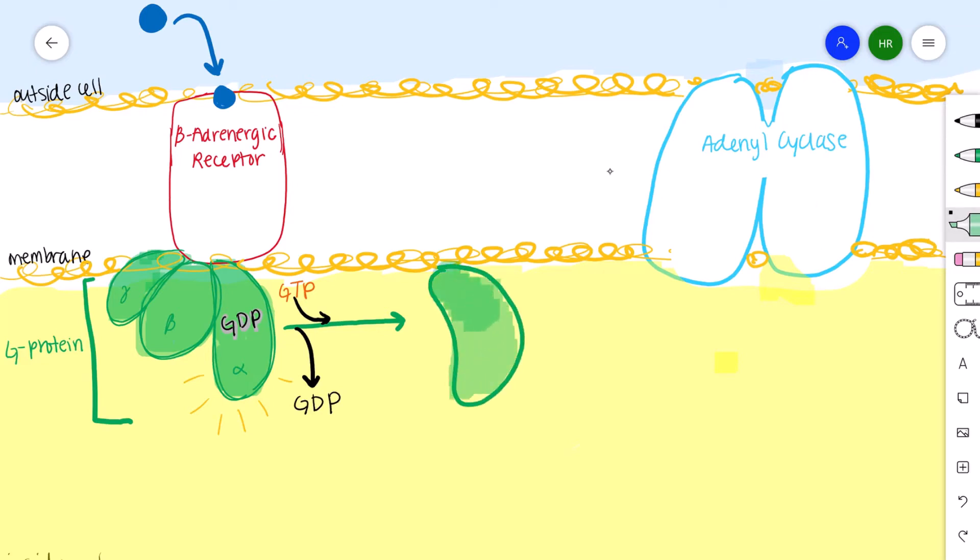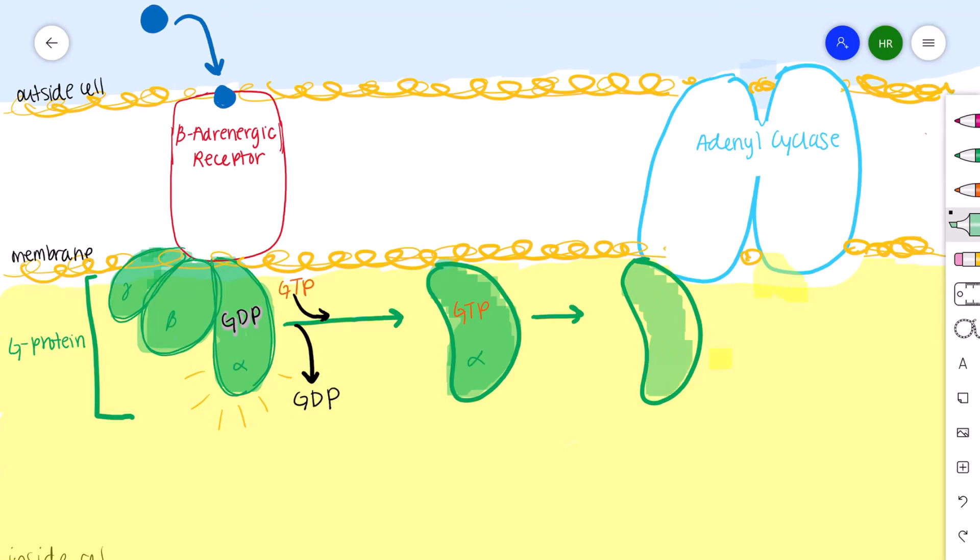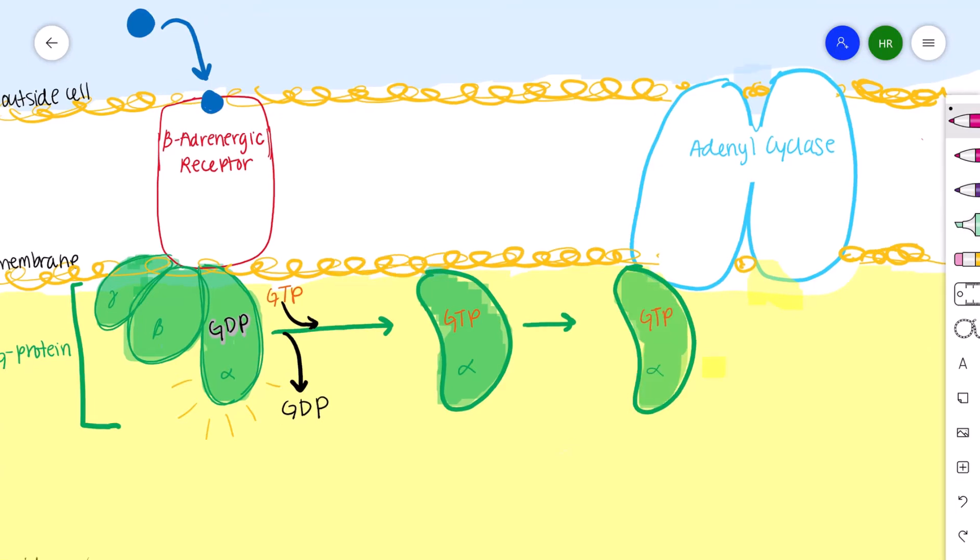The new GTP on the alpha subunit allows it to dissociate from the G-protein receptor and travel to an enzyme called adenyl cyclase. The alpha subunit binds to adenyl cyclase, creating the start of our secondary messenger system. The activation of adenyl cyclase catalyzes the conversion of ATP molecules into cyclic AMP.